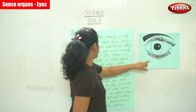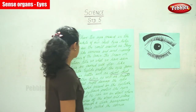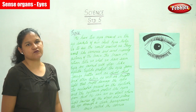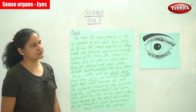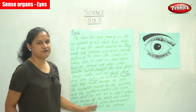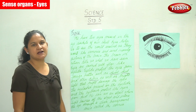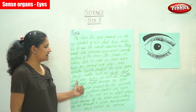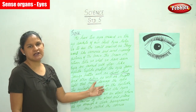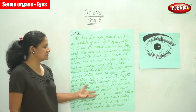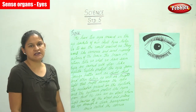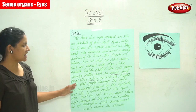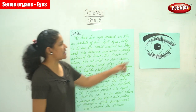The purpose of the eyelids is to protect the eyes from foreign matter such as dust, dirt, and other debris, as well as bright light that might damage the eyes.